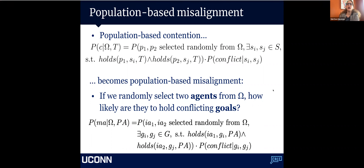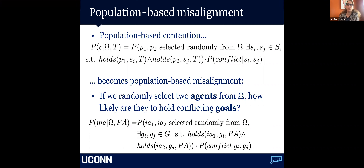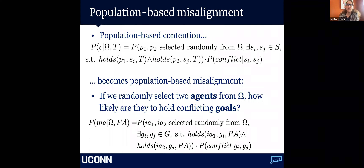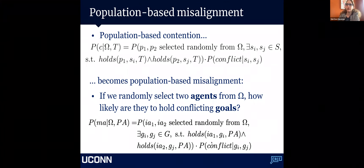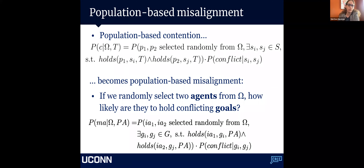The intuition is that the contention score goes up the more conflicting stances people hold. This now becomes the basis for population-based misalignment: if we randomly select two agents, how likely are they to hold conflicting goals with respect to a problem area? For example, if my goal is to eat Italian for dinner and Aidan's goal is to eat a low-priced dinner, the goals may not be in conflict if there's a cheap Italian restaurant nearby — but if the only open Italian place is super high-end, we're in conflict.